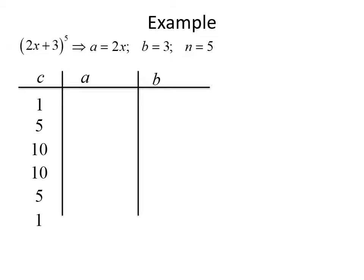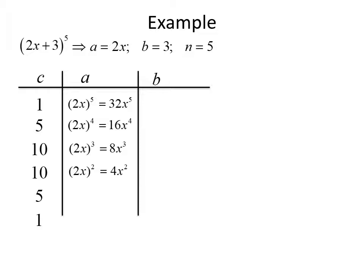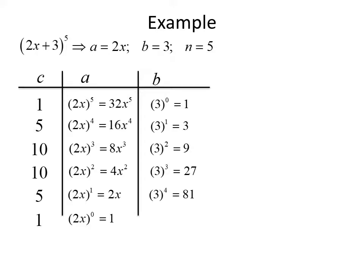Our a is 2x, starting with the full power in the first row: (2x) to the fifth equals 32x to the fifth. Each additional row the power decreases: (2x) to the fourth is 16x to the fourth; (2x) cubed is 8x cubed; (2x) squared is 4x squared; 2x to the first is 2x; and 2x to the zero is 1. Our b, the second term, is positive 3, starting with the power of 0: 3 to the zero is 1; 3 to the first is 3; 3 squared is 9; 3 cubed is 27; 3 to the fourth is 81; and 3 to the fifth is 243.